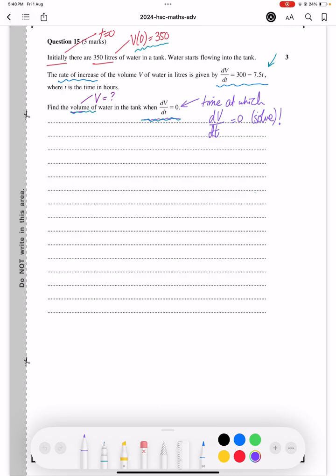Here's a rate of change question for you. It says initially there are 350 litres of water, so that means V(0) = 350.